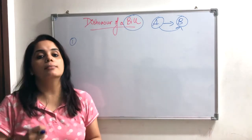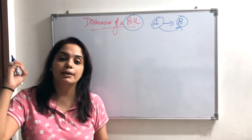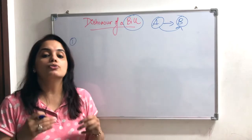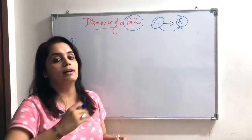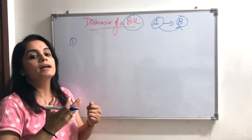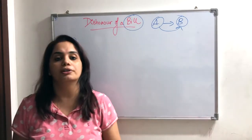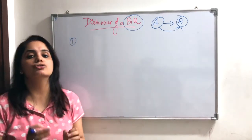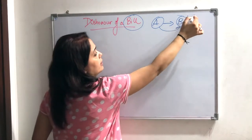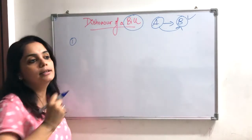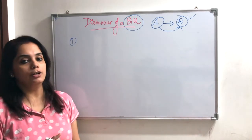In that case, the bill is dishonored and it is recorded via a notary public, so that there is legal proof that the payment has not been made. It will be recorded via notary public as a legal document and evidence that the bill has been dishonored. There is no role of the drawer in this noting process.